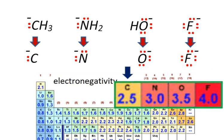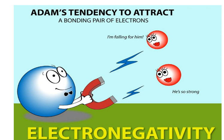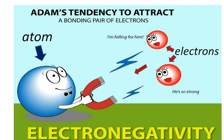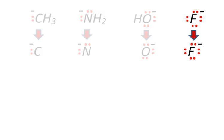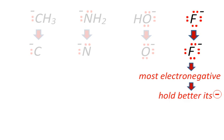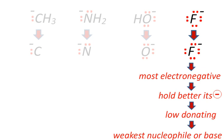Remember that electronegativity describes the tendency of an atom to attract or hold electrons toward itself. So F, which is the most electronegative atom in this group, would better hold its negative charge and its ability to donate its electrons would be low. So F is the weakest nucleophile or base among those molecules.